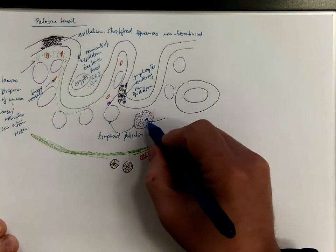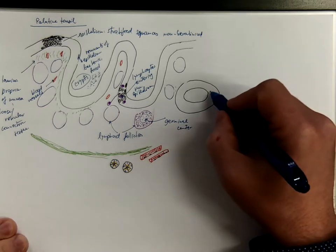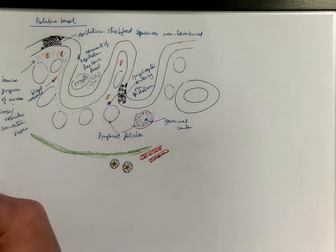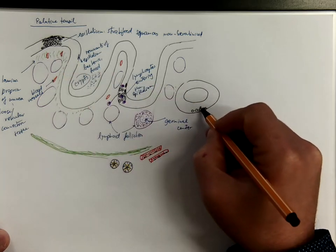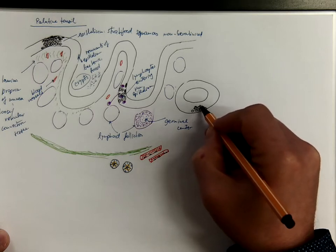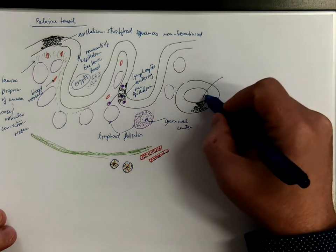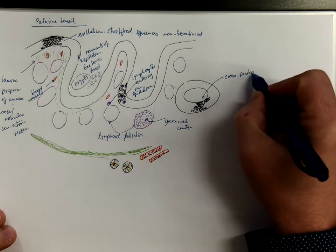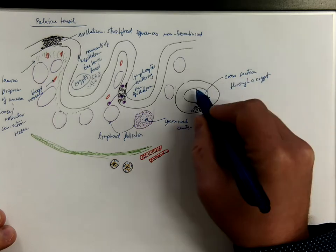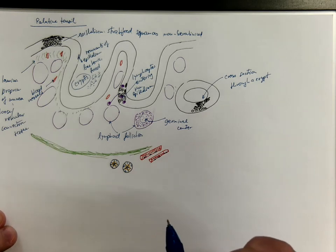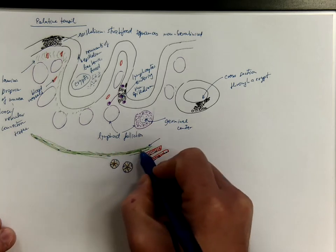Then you have these lymphoid follicles everywhere. Many of these have the germinal centers. And there could be these cross sections through the crypts. They could be easily identified because they have the same epithelium as this on the surface. So they got the stratified squamous non-keratinized epithelium. So this would be the cross section through a crypt.